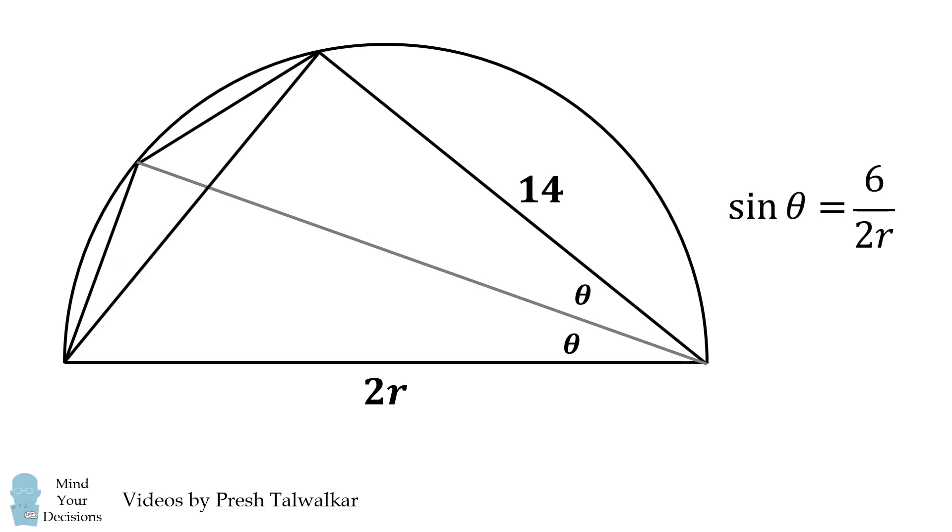We'll draw another chord. This is also an inscribed angle of the semicircle, therefore it's a right angle. Consequently, cosine of 2 theta will be equal to 14 over 2r.